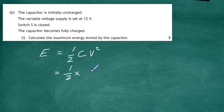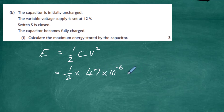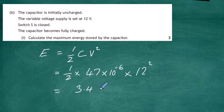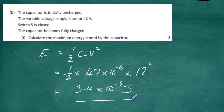Substituting values: E = ½ × 47 microfarads (47 × 10⁻⁶ F) × 12 volts squared. Doing that calculation gives an energy of 3.4 × 10⁻³ joules, or 3.4 millijoules. That is the maximum energy stored in the capacitor.